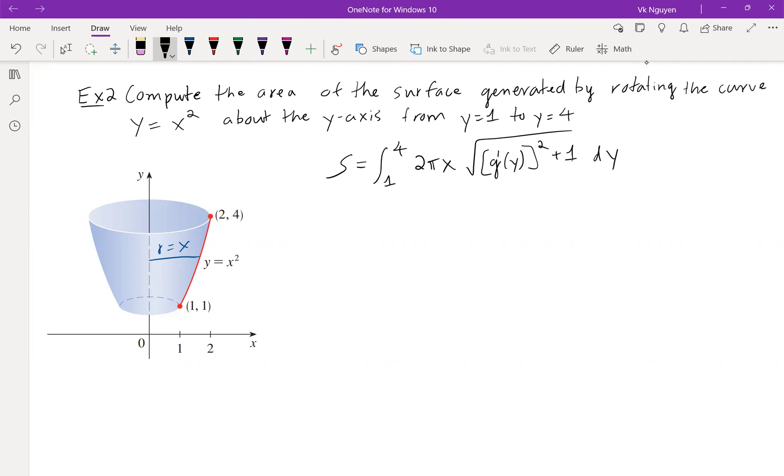The surface area is integral from 1 to 4, 2 pi x multiplied to the arc length, root of g prime y square plus 1 dy. For g prime y, we can simply solve for x. So we know x is going to be plus or minus root y. However, the value of x is positive, so it can be root y, and it is g of y. Integral 1 to 4, 2 pi root y, g prime y is 1 over 2 root y square plus 1 dy.